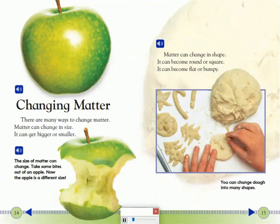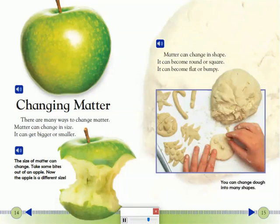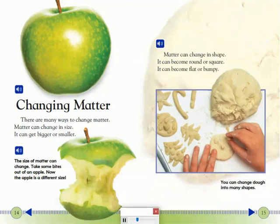Changing Matter: There are many ways to change matter. Matter can change in size — it can get bigger or smaller. Take some bites out of an apple; now the apple is a different size. Matter can also change in shape. It can become round or square, flat or bumpy.